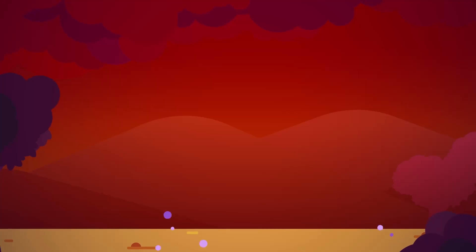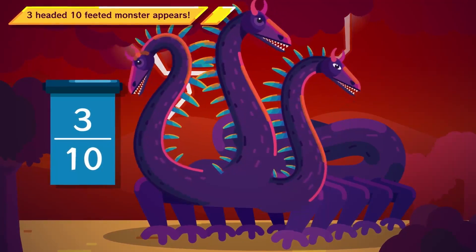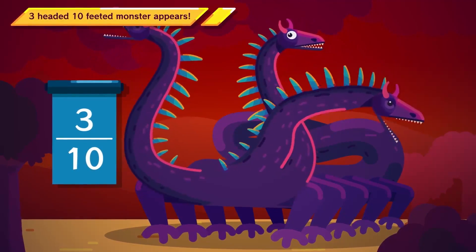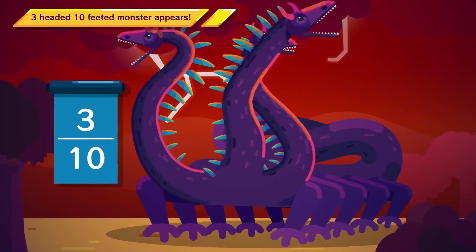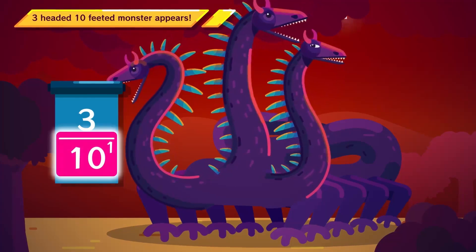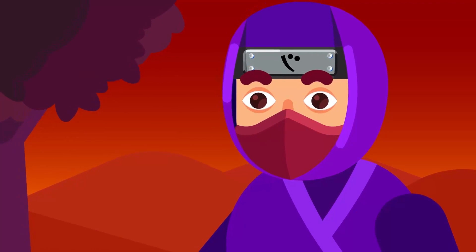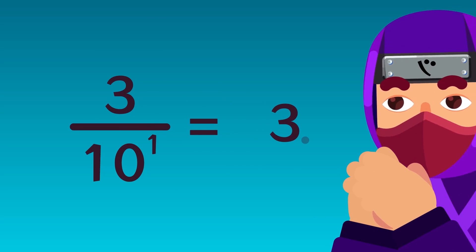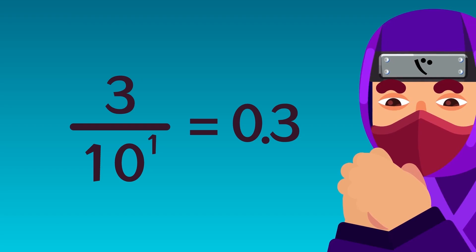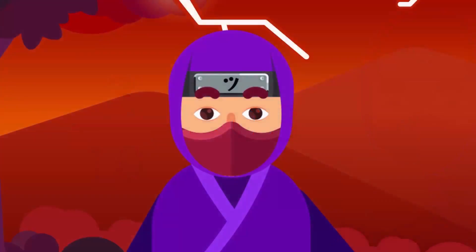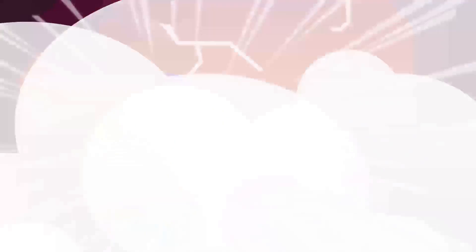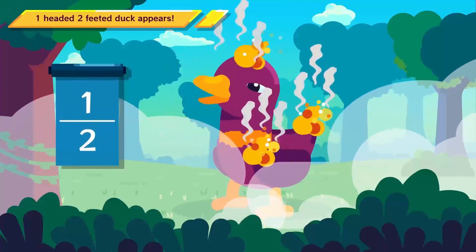Suppose that we want to put 3 over 10 as a decimal. This fraction has one zero in the denominator, so the index of 10 is 1. As we divide by 10 to the power of 1, we put the decimal point after one space from the right. Thus the answer is 0.3.